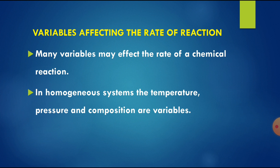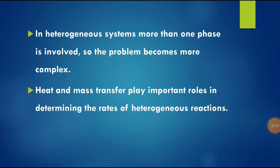Many variables may affect the rate of a chemical reaction. In homogeneous systems, these include temperature, pressure, and compositional variables. In heterogeneous systems, more than one phase is involved, making the problem more complex — heat and mass transfer play important roles in determining the rates of heterogeneous reactions.